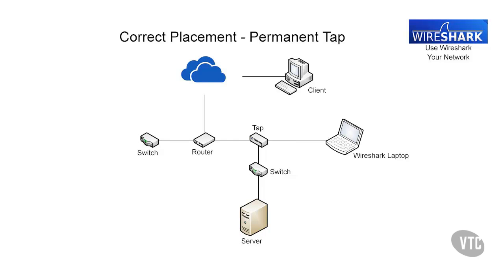Installing a permanent tap is the best solution, especially for larger networks, as this image shows, which is installed at the router. Some administrators use this method for a permanent connection point at critical areas within their network. The Wireshark laptop then sees all traffic going to and from the server plus any other traffic on the segment. Using this method does not disrupt traffic, and if the tap is permanently installed and the cables are already connected, you can simply connect your Wireshark laptop whenever you need.